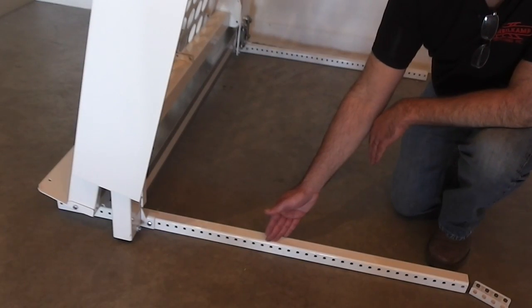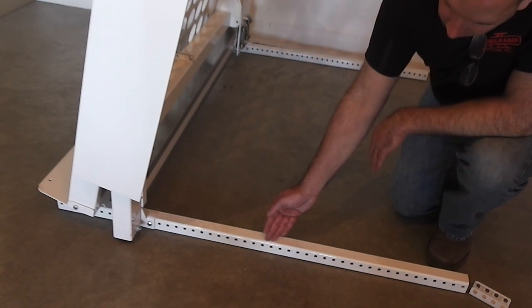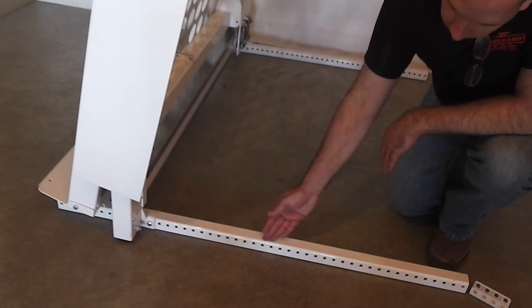The display units are modular, so you can adjust the distance between each rack. If you're going to display 12-inch mattresses, we recommend that you start with 14 bolt holes between each unit.